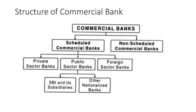Let us understand the structure of commercial banks in India. Commercial banks are classified into scheduled commercial banks and non-scheduled commercial banks. Scheduled commercial banks are those listed by the Reserve Bank of India. To get on the scheduled list, a bank must satisfy certain norms: the paid-up share capital must be above a particular limit — more than 5 lakhs — the bank should have been established for at least 5 years, and its statements should have been audited. These banks must follow the rules and regulations of the RBI.